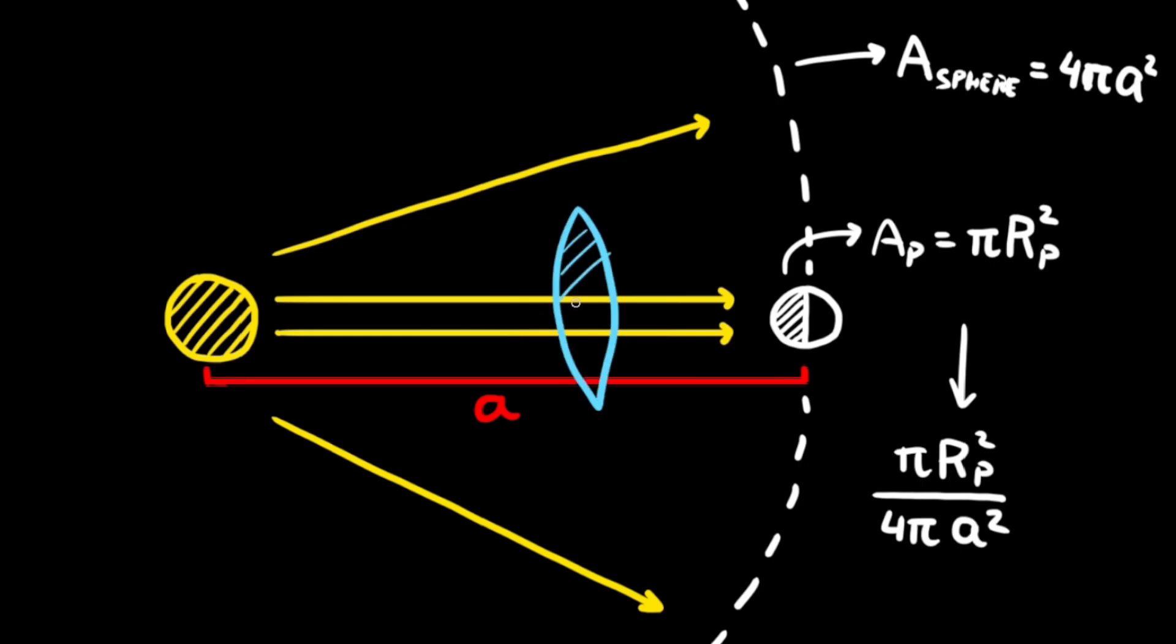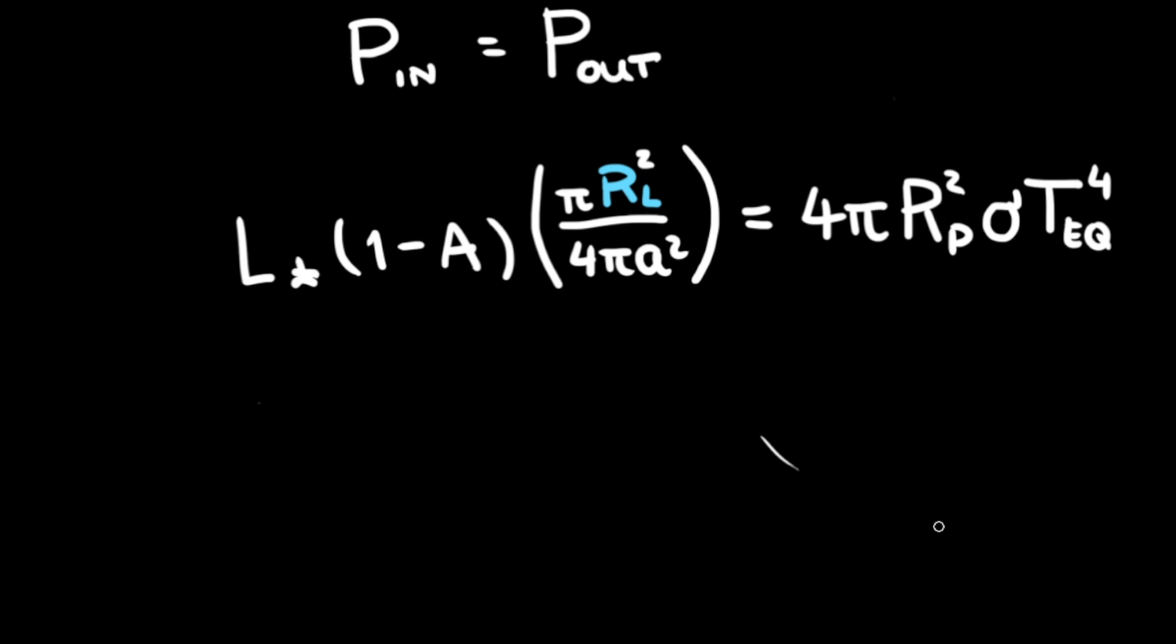But if we have a lens collecting the light for us, it's not just these beams of light that will reach the planet, but also the light that would normally pass around it if the lens is big enough. So this area is not the frontal area of the planet, but that of a lens. And thus we suddenly have the equation for the size of the lens.